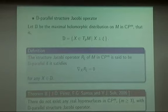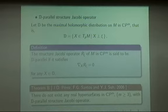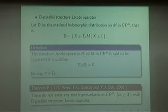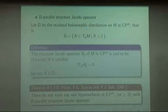Thereafter, many geometers have considered the generalized parallel structure Jacobi operator. For instance, Professor Perez, Santos, and Youngjin Seo introduced the new notion of D-parallel structure Jacobi operator. Here D is the maximal holomorphic distribution in complex projective space. The structure Jacobi operator satisfying this equation for X belonging to the maximal holomorphic distribution D is called D-parallel. They also gave a non-existence theorem for real hypersurfaces of complex projective space.